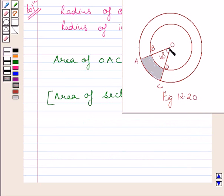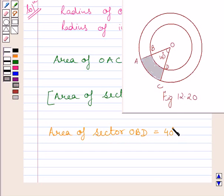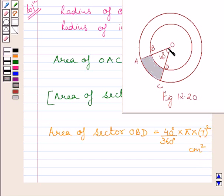Now we will find the area of sector OBD. This is equal to 40 degrees upon 360 degrees, multiplied by pi, multiplied by the square of 7 cm. Here, radius is equal to 7 cm and the central angle, theta, is equal to 40 degrees. Substituting the corresponding values of theta and R in the formula of area of sector, we get the area of sector OBD.